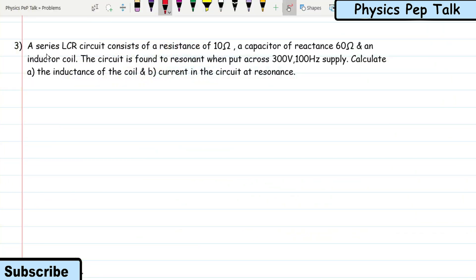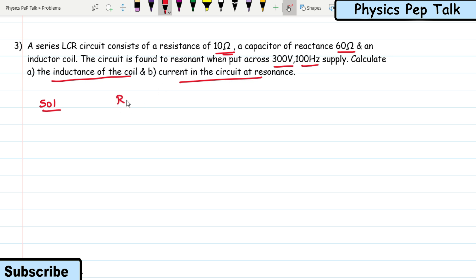Next problem: a series LCR circuit consists of a resistance of 10 ohms, a capacitor of reactance 60 ohms, and an inductor coil. The circuit is found to resonate when put across a 300 volt, 100 Hz supply. Calculate the inductance of the coil and the current in the circuit at resonance.